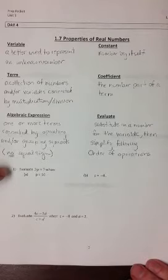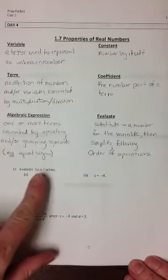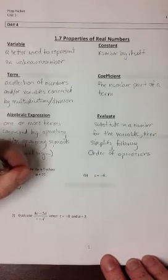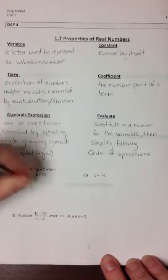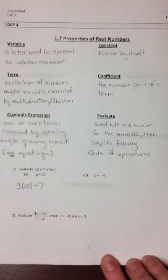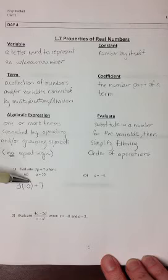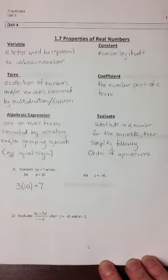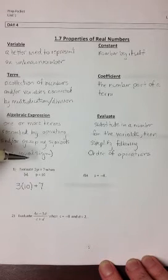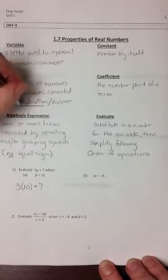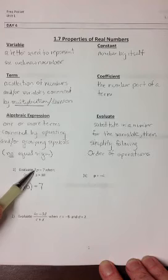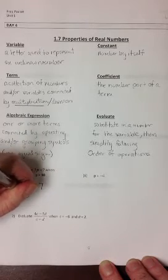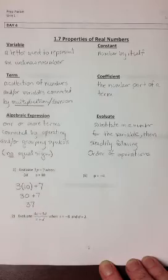Our first example is to evaluate 3p plus 7, when p is equal to 10. So to do this, we're going to rewrite the expression 3, put the 10 in parentheses, and then write 7. You'll notice I just took that letter p, put a set of parentheses instead, and wrote a 10 where I used to have the p. Now we'll follow order of operations to solve this. When a number is right next to a letter, remember the operation that's connecting them is multiplication. So this means 3 multiplied by p. Since p is 10, we're going to take 3 and multiply by 10. That will give us 30, and then we add the 7 for a total of 37.